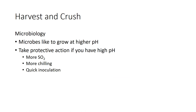I consider harvest and crush to be pretty much the same process. pH here impacts our microbiology — microbes are more likely to grow at higher pH, regardless of type, so you may need to take protective action. That could involve more sulfur dioxide in the vineyard or on the crush pad, more must chilling or harvesting at night to maximize coldness, and if there's a risk of spoilage, quick inoculation with a Saccharomyces strain to suppress whatever's inclined to live at that high pH.